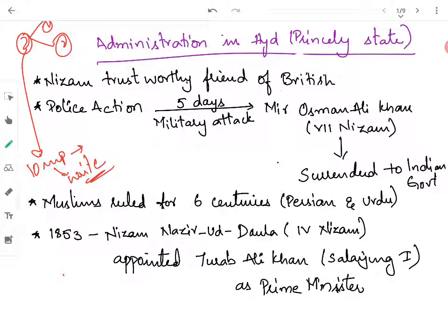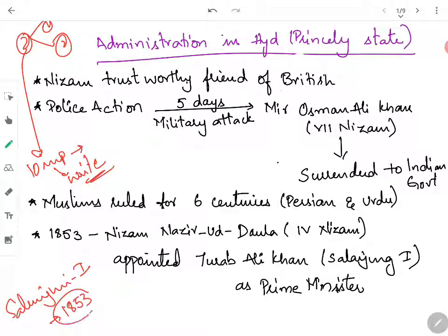In today's class we will discuss one of the most important questions in Chapter 1 of Section 1, which is Salar Jung I reforms. Salar Jung I was appointed as the Prime Minister of Nizam State in 1853 when the state of Nizam was in a very bad condition and was in huge debts.